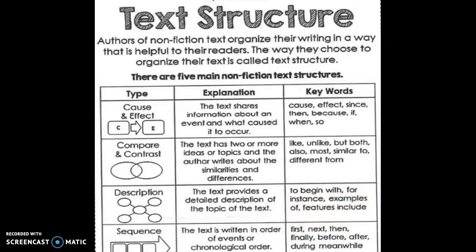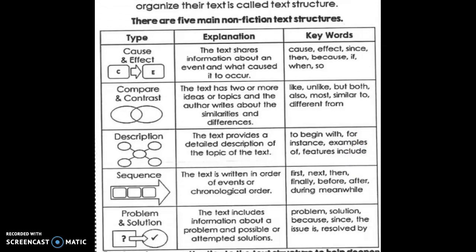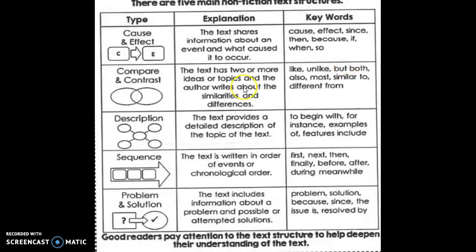The next type is sequence, also called chronological style of writing, which means writing in the order of dates or events and how the events occurred. The graphic organizer available for this is usually linear, and a timeline can be used. The text is written in order of events and in chronological order.